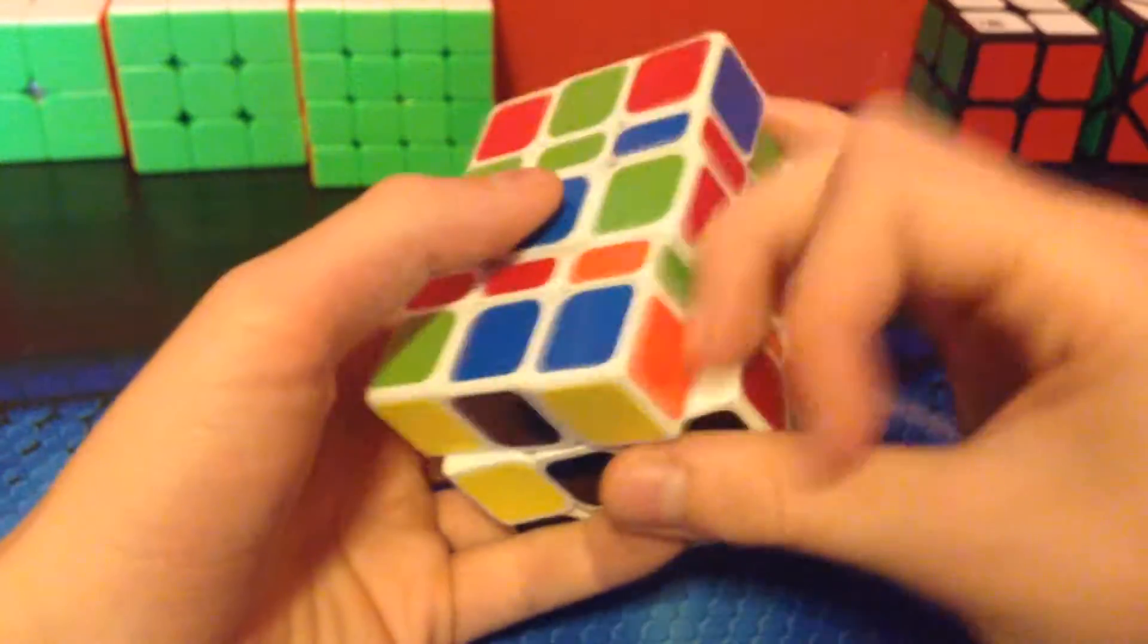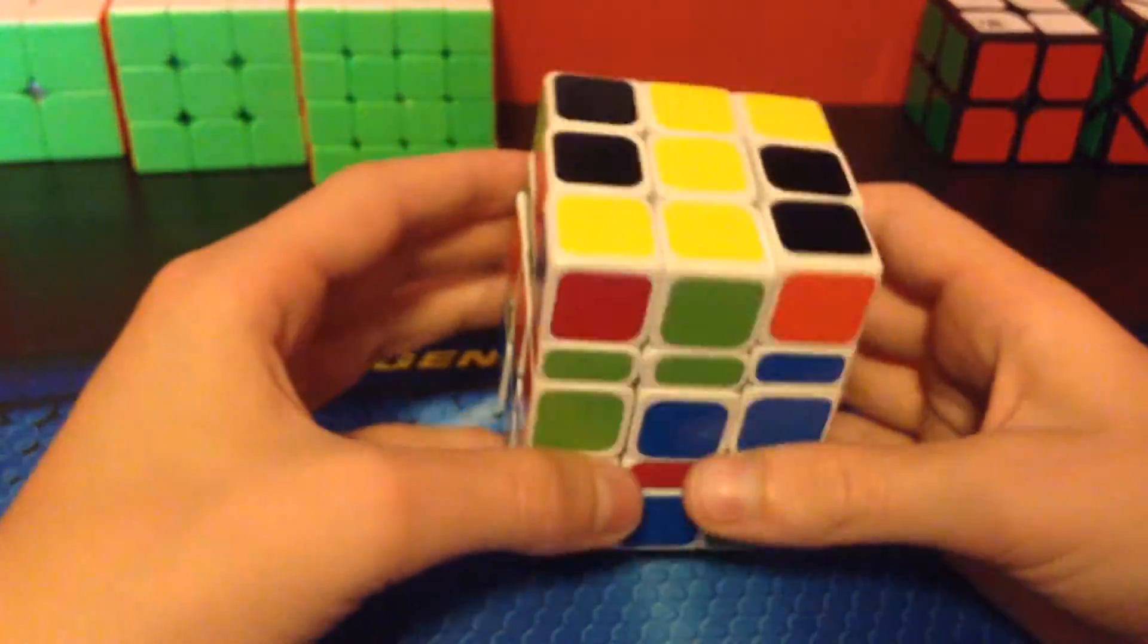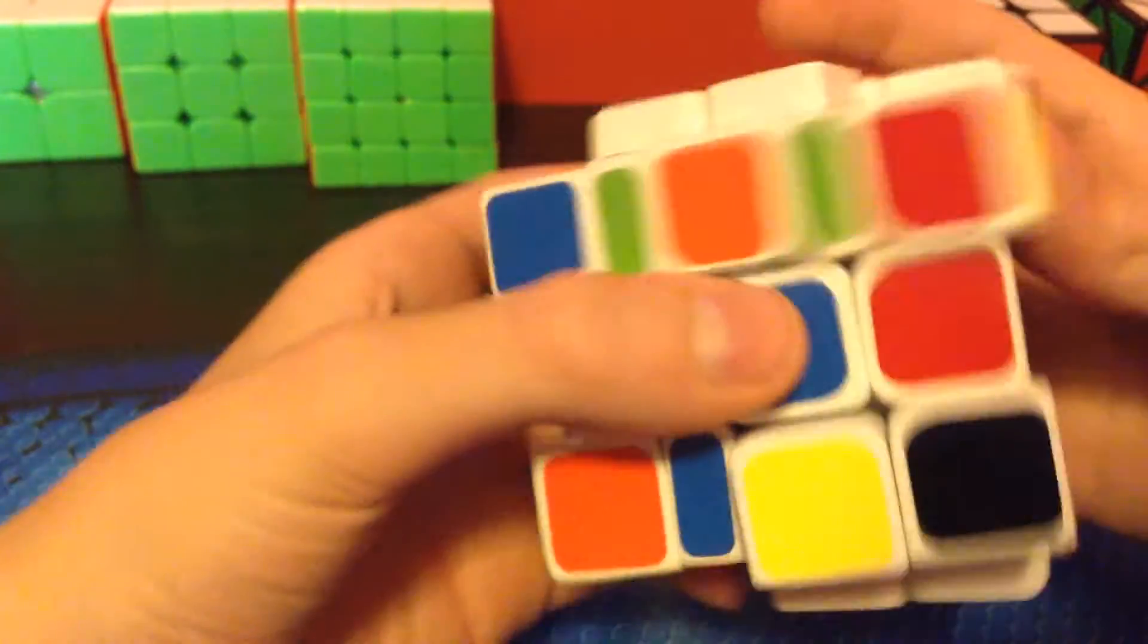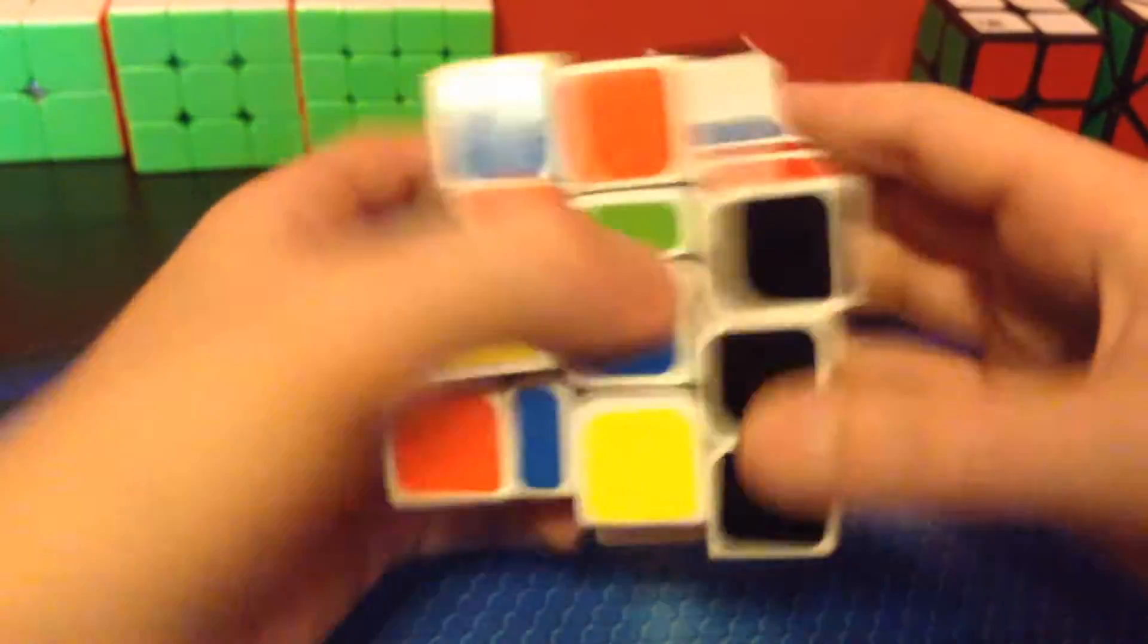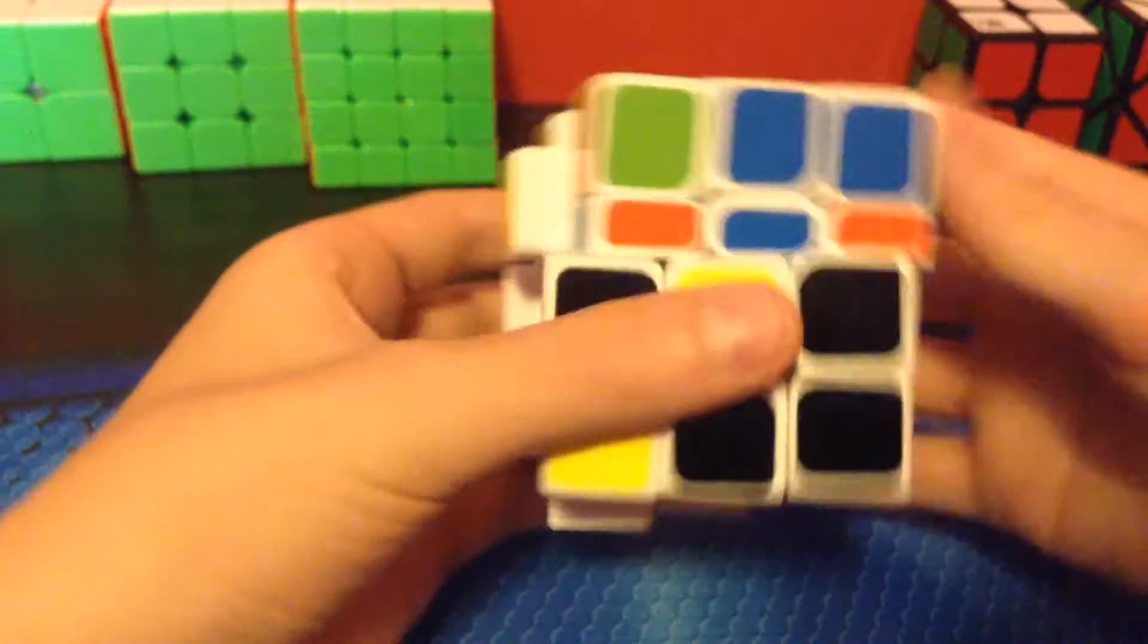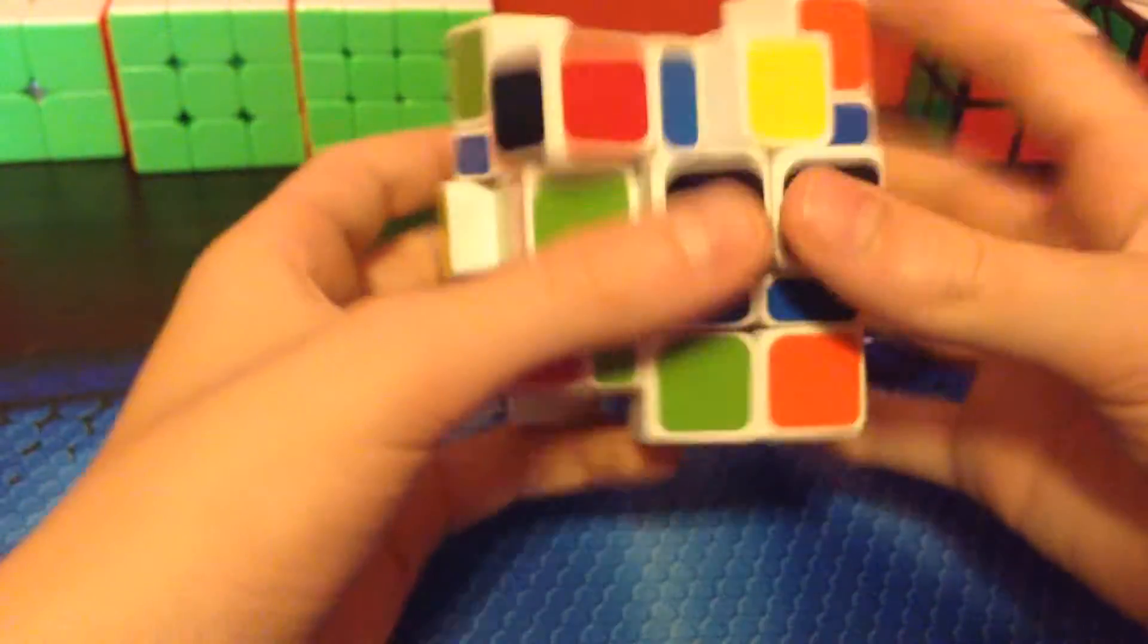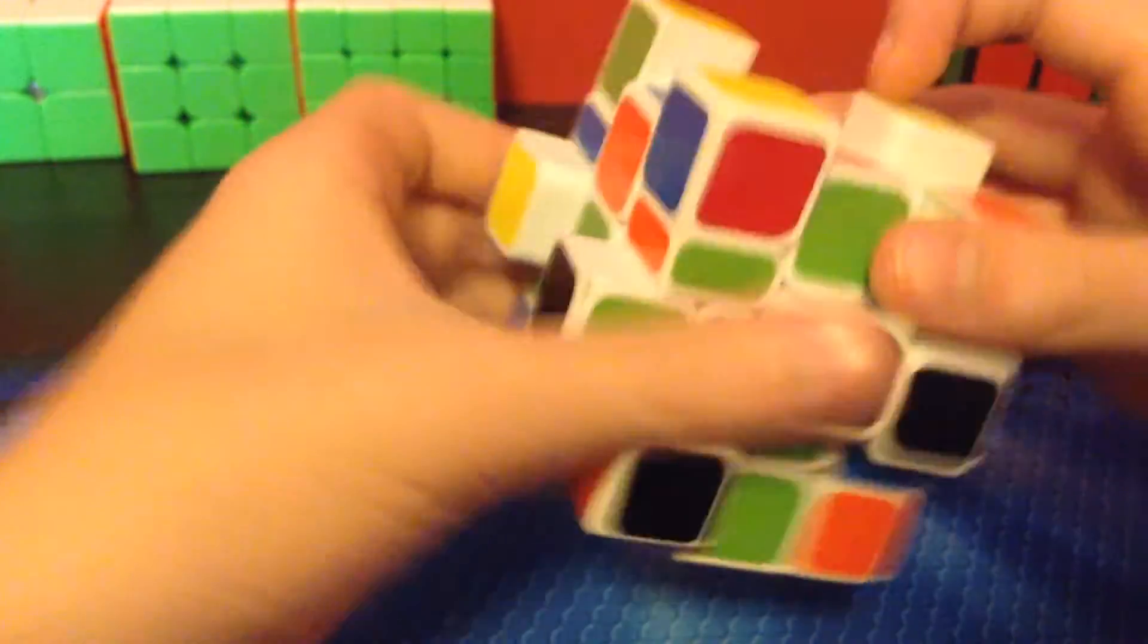So, once you've scrambled those around, you can then start doing these, and now it just turns like a 3x3, so you just keep scrambling it like that until it looks like a good enough scramble.